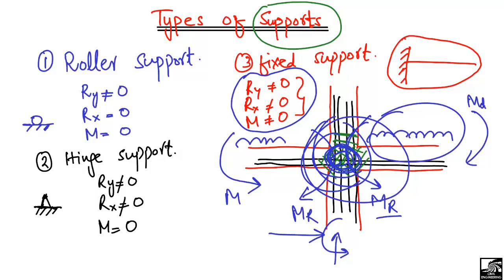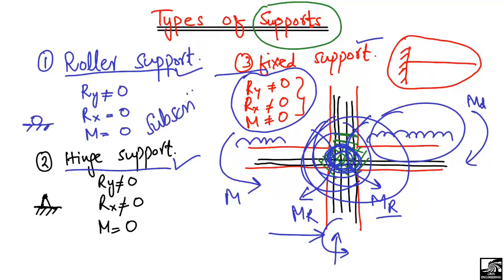So I hope you guys understand the three different types of supports: roller support, hinge support, and fixed support. You can differentiate them by identifying which kind of resistance is provided by a member and accordingly define it as a roller, hinge, or fixed support. Don't forget to subscribe to this channel. Thank you for watching.